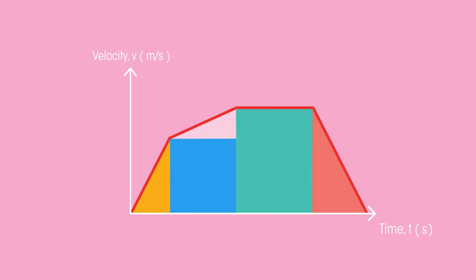Whilst it doesn't matter exactly how you split the area up, the fewer shapes you have, the fewer calculations you'll have to do. As a general tip, try to include a triangle where you see diagonal lines and rectangles where there are horizontal sections.